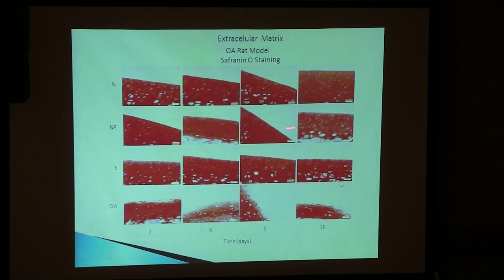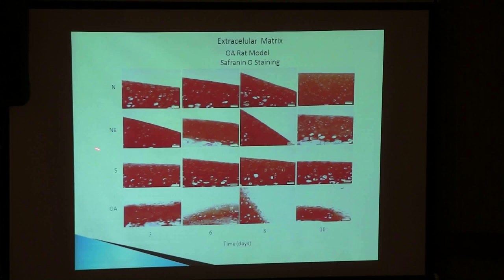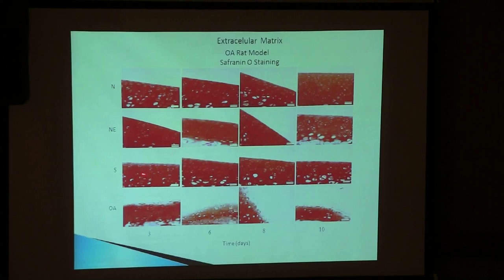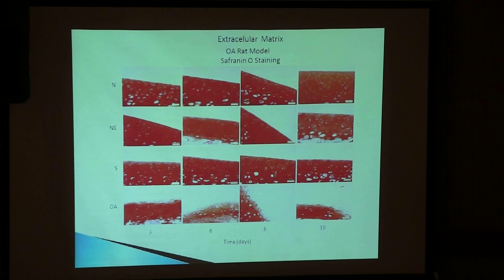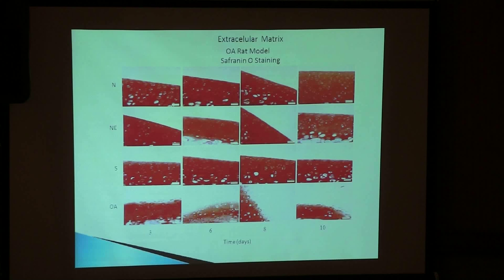The same thing happened with the extracellular matrix — normal, with exercise, CHAM (which I'll explain shortly), and in osteoarthritis. In normal cartilage, this is the normal staining of the extracellular matrix. Exercise by itself doesn't produce any important changes. CHAM is the experimental model in which we induce an incision of the articulatory capsule, but we don't remove the meniscus. Our osteoarthritis model is meniscectomy of the rat in the left leg, and in that case we also have loss of the extracellular matrix.